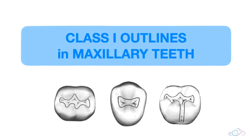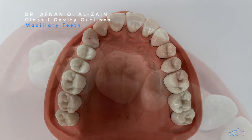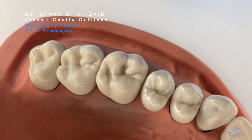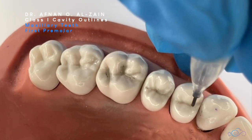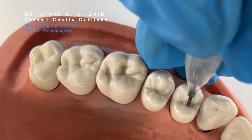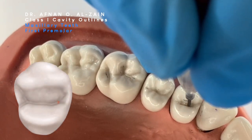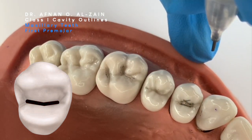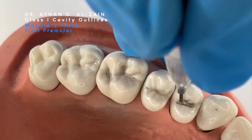Moving on to the maxillary teeth — the class one outlines for maxillary teeth. We're going to start with the first premolar, or tooth number four. It's the same concept — we're going to go from the triangular fossa to the triangular fossa, so we're going to draw a line. In the upper first premolar, it's going to be similar to a straight line. This is the outline for the upper first premolar.